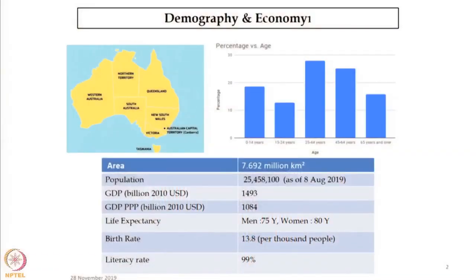Australia is the sixth biggest country in the world. They have a population of 2.5 crore. 30 percent of the people are youngsters who are contributing more to their GDP. Life expectancy for Australian men is 75 and for women it is 80. The literacy rate of Australia is 99 percent. The GDP of Australia comes mostly from the service sector, then the industry sector, then agriculture.